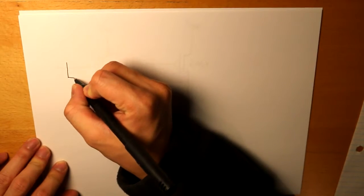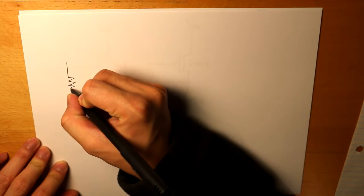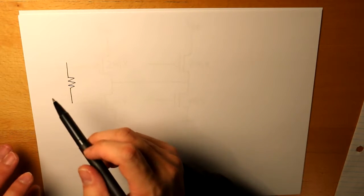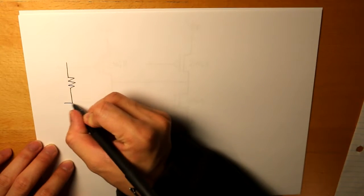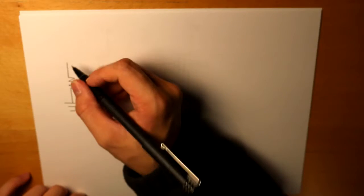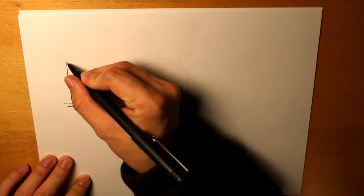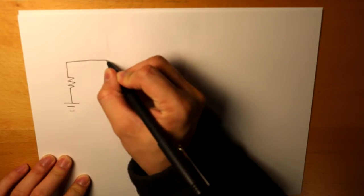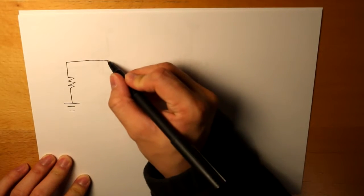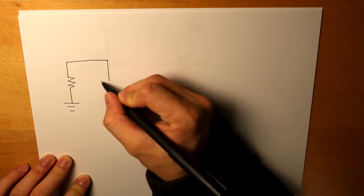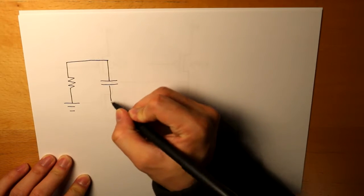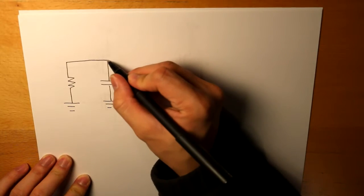First, I'm going to draw the inverter that was on the left. So we have this resistor here, and then we have a capacitance here shorted to the ground.